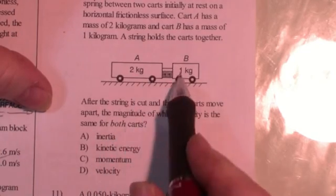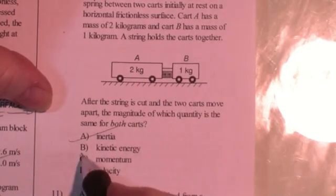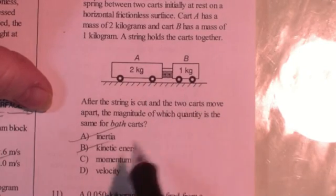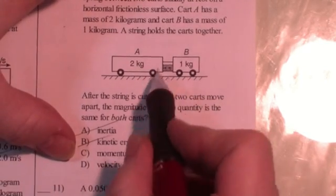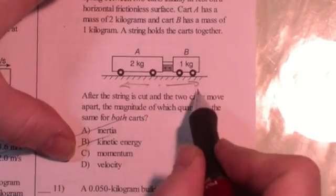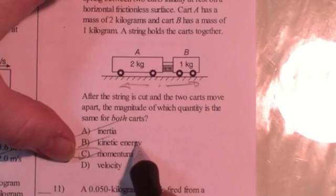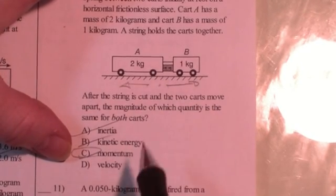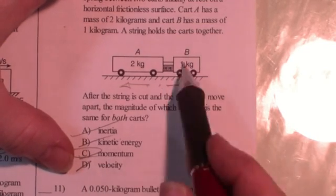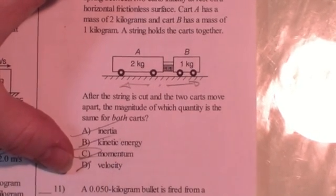Momentum. Inertia is an indication of mass. That can't be true because they have different masses. Kinetic energy is a function of velocity, and it's velocity squared, so that won't be the same. They will have the same momentum. The momentum before they were cut was zero. The momentum afterwards has to be equal to zero. And velocity, you don't even have to know what the numbers are. If they have different kinetic energies, they'll have different velocities. If they have the same velocity, well, they have different masses, so they don't necessarily have to have the same kinetic energy.